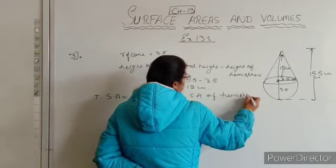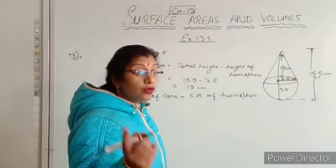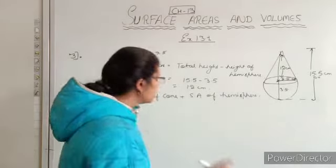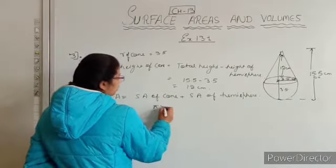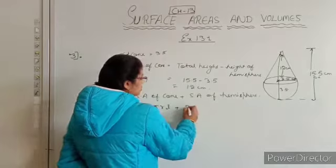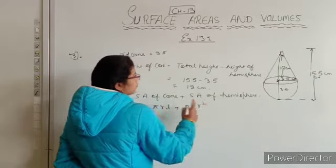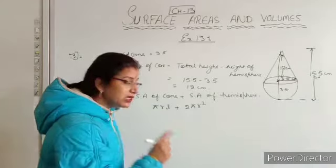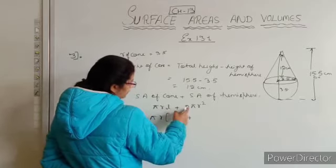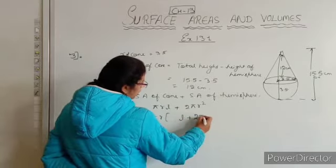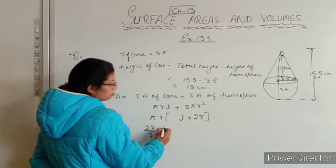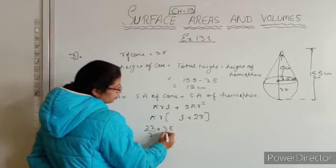What is the surface area of the cone? Curved surface area of cone is πRL. So total surface area of toy equals curved surface area of cone plus curved surface area of hemisphere: πRL + 2πR squared. The radius is the same for both, so we can take πR common, leaving L + 2R inside.